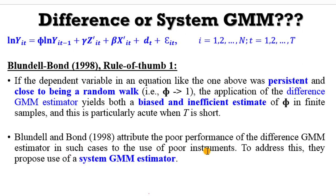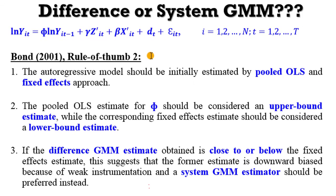Blondel and Bond attribute the poor performance of the Difference GMM estimator in this situation to the use of poor instruments, and to address this they propose to use System GMM estimator. The second rule of thumb is from Bond 2001, and Bond 2001 was able to provide a clearer path that will easily guide the researcher in deciding whether to use Difference or System GMM.